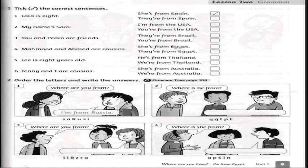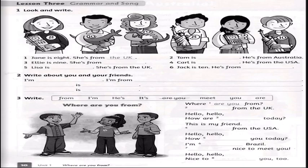Then we go to Exercise 2: order the letters and write the answers — we have to order the letters of the countries. We answer: Where are you from? I am from Russia. Where is he from? He is from Egypt. Where are you from? I am from Brazil. Where is she from? She is from Spain.